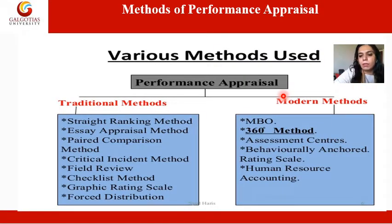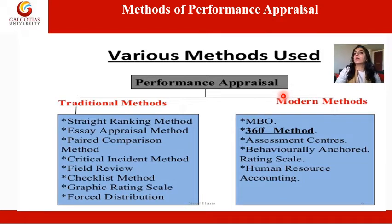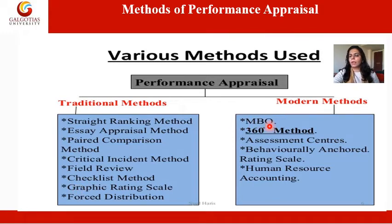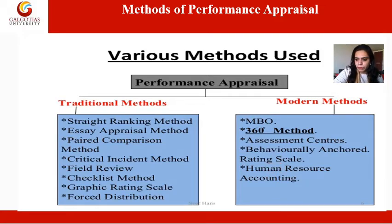There are two broad categories of methods commonly used for performance appraisal. Traditional methods include: straight ranking method, essay appraisal method, paired comparison method, critical incident method, field review, checklist method, graphic rating scale, and force distribution. Modern methods include: MBO (Management by Objectives), 360-degree method, assessment centers, behaviorally anchored rating scale, and human resource accounting method.